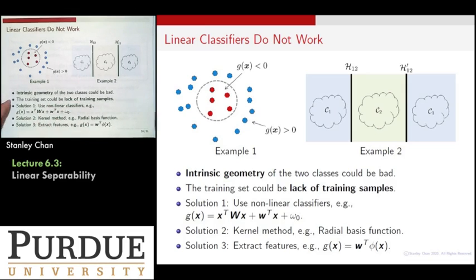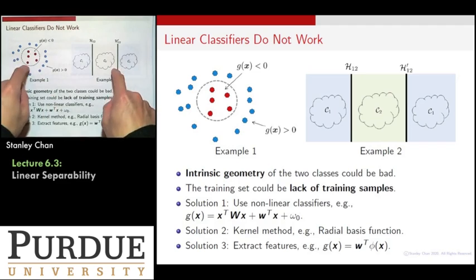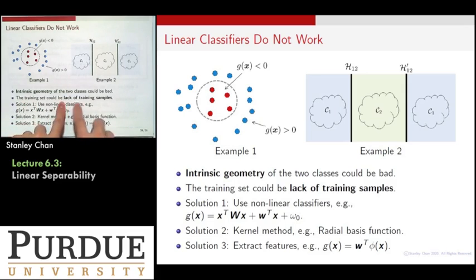I want to give a final remark that there are two issues we want to decouple. One is the intrinsic geometry of the problem, which comes from these two examples. The problem itself doesn't allow you to do anything. The other issue is the lack of training samples. The lack of training samples will give you a worse classifier, but that doesn't solve the first problem, even if you have infinitely many training samples. These are two different levels of problems when you encounter a classification problem.